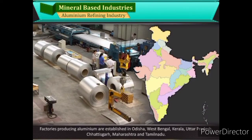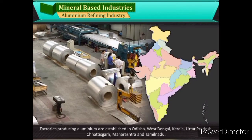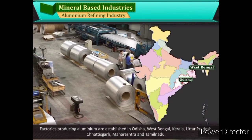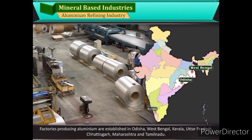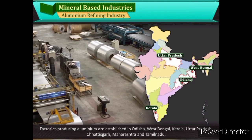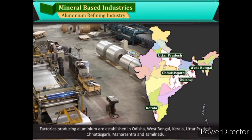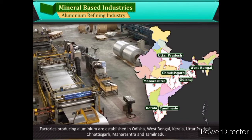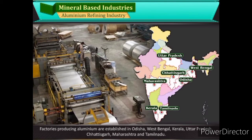Factories producing aluminium are established in Odisha, West Bengal, Kerala, Uttar Pradesh, Chhattisgarh, Maharashtra, and Tamil Nadu.